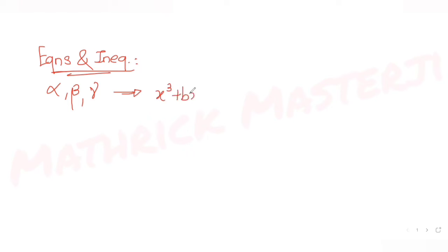The question tells us: let alpha, beta, and gamma be the roots of a cubic equation which is given to us. Alpha, beta, gamma are the roots, and the equation that is given to us is x cubed plus bx plus c equals zero.